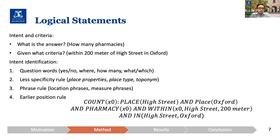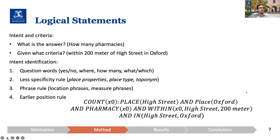To identify the intent of the question, we propose a rule-based heuristic method using question words and the phrases that are identified, also by removing candidates when we apply the phrase. This is the logical representation of the example question: we need to find out how many x0 exist, where x0 is a pharmacy with the criteria that it should be within 200 meters of High Street.